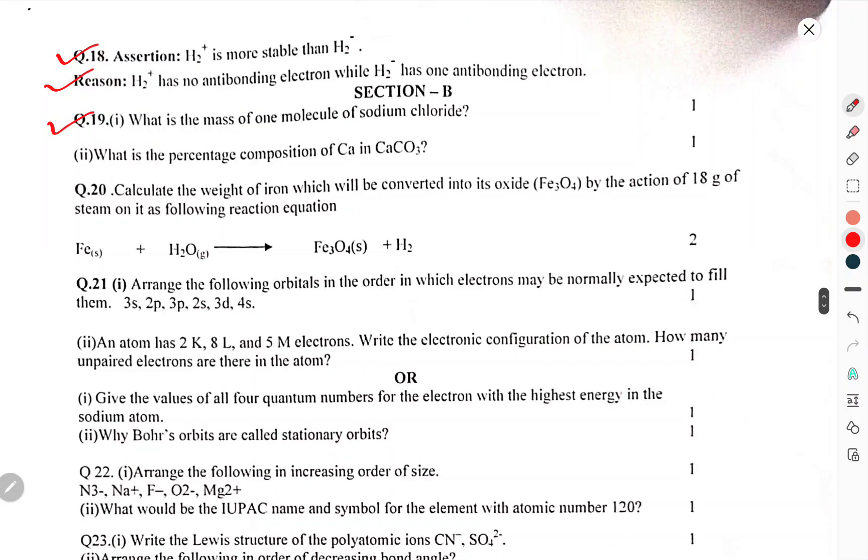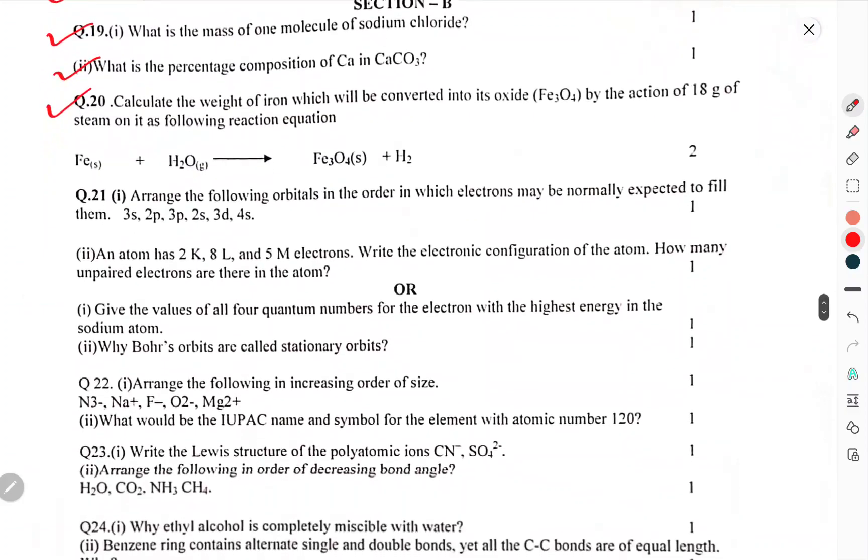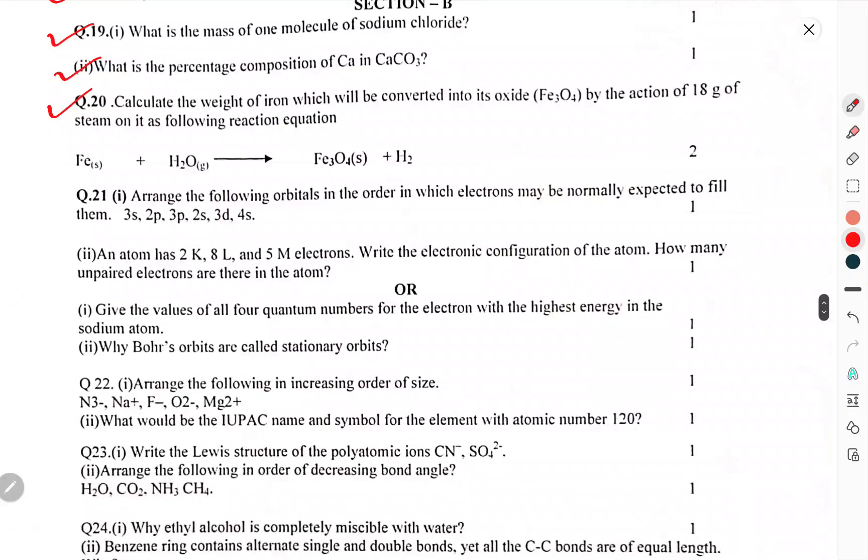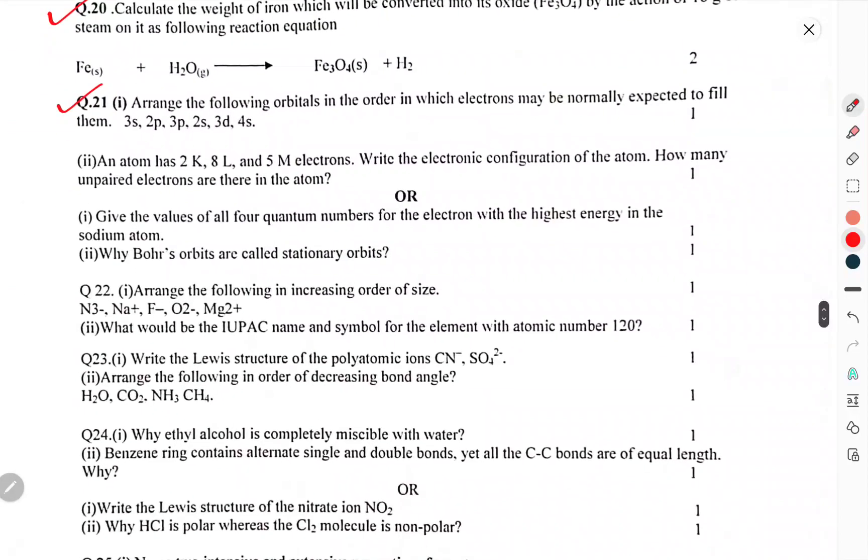Section B: What is the mass of one molecule of sodium chloride? What is the percentage composition of calcium in calcium carbonate? Calculate the weight of iron which will be converted into the oxide Fe3O4 by the action of 18g of steam in the following reaction equation. Arrange the following orbitals in which electrons may be normally expected to fill: 3s, 2p, 3p, 2s, 3d, 4s.